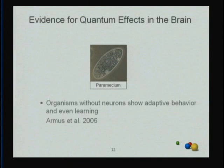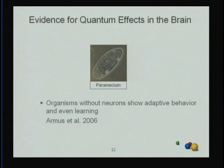Many people have observed this: there are organisms like a paramecium that show adaptive behavior. A paramecium can avoid an obstacle, find food, find a mate. A very recent paper by Armus et al. shows learning abilities. Obviously a paramecium is a single cell with no nervous system. So how is information processing — which clearly occurs — accomplished within the single cell?